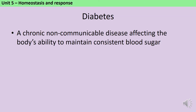In addition to describing how blood sugar levels are controlled in a healthy person, you need to know about diabetes, which is a chronic or long-term non-communicable disease — meaning it can't be passed from person to person — which affects whether a person is able to maintain consistent blood sugar without medical intervention. There are two types of diabetes you need to know about, and they're both caused by some part of the normal blood sugar control system ceasing to function properly.